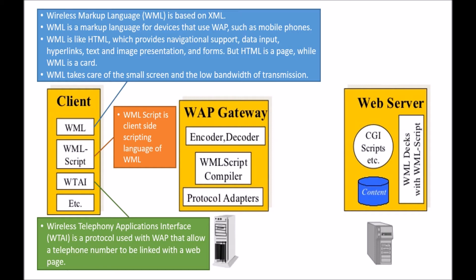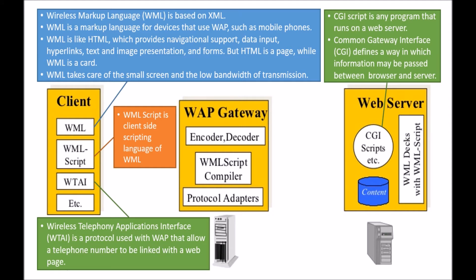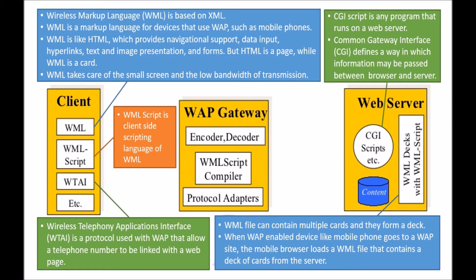Next is the web server. Its first component is the CGI script. CGI stands for Common Gateway Interface. A CGI script is any program that runs on the web server. CGI defines a way in which information may be passed between the browser and the server — any communication between browser and server is handled by CGI. The next component is the WML deck. A WML file can contain multiple cards and they form a deck. When a WAP-enabled device like a mobile phone visits a WAP site, the mobile browser loads a WML file containing a deck of cards from the server.